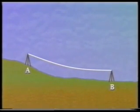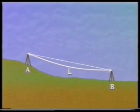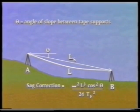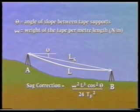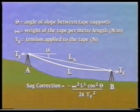The sag correction is also only applicable to steel taping, and is only used on rare occasions when the tape sags under its own weight, forming the shape of a catenary curve — so it is also known as the catenary correction. The measured length is L, and the sag correction is applied to this to give the straight-line distance Ls. The correction is omega squared multiplied by L cubed multiplied by cos squared theta, divided by 24 TF squared. Where theta is the angle of slope between the tape supports, omega is the weight of the tape per meter length, and TF is the tension applied to the tape. This correction must always be subtracted if horizontal lengths are required.